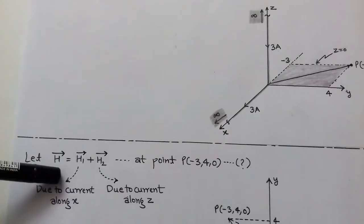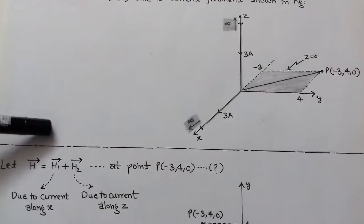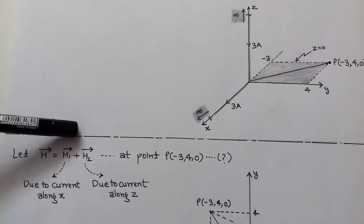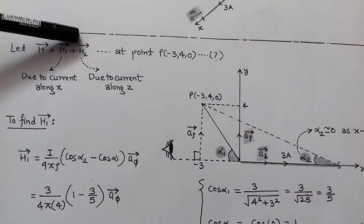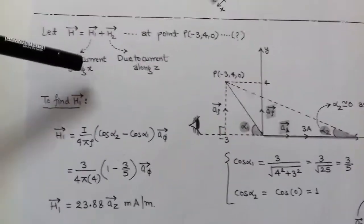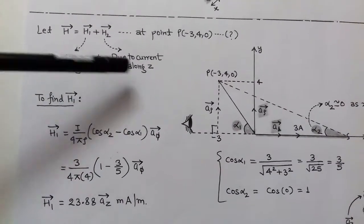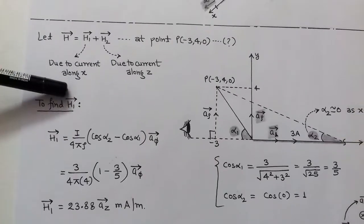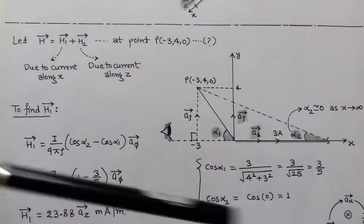We break this into two parts: first with respect to z-axis, and second with respect to x-axis. We consider H1 due to current along z-axis and H2 due to the current filament situated along x-axis.